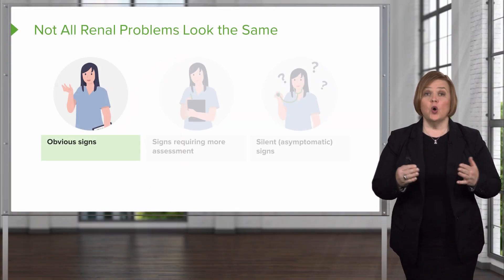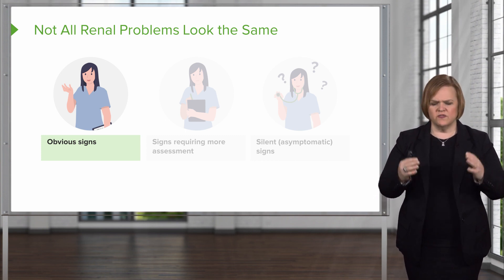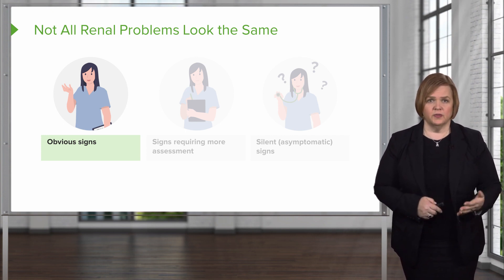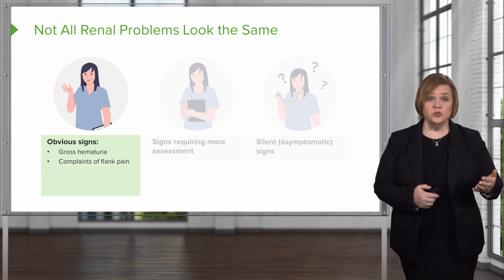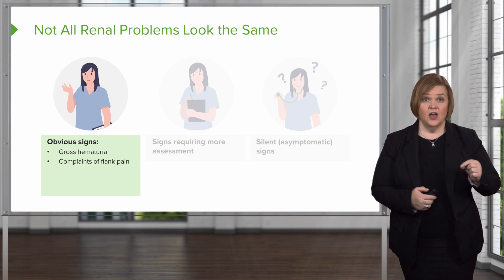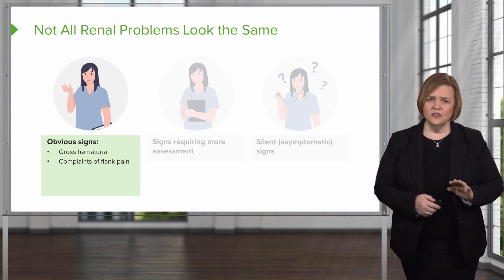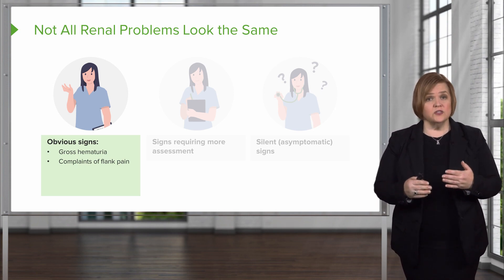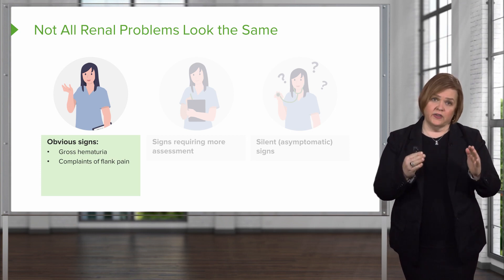Now that we've looked at an overview of what healthy kidneys do, I want to give you three categories of things you can be looking for as a nurse assessing renal problems. The first group are pretty obvious signs. If you saw a patient who had gross hematuria — that means a lot of blood in their urine — you're going to know right away things are not right. Also, if they're complaining of really bad flank pain, those are acute symptoms that let you know there's a definite problem. We'll call those the obvious category.